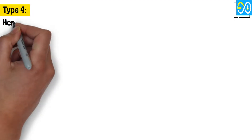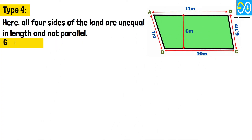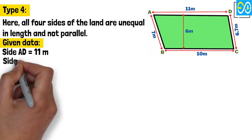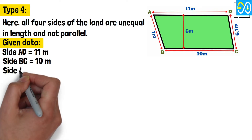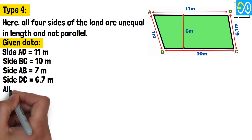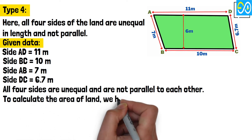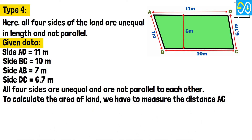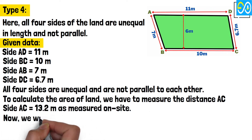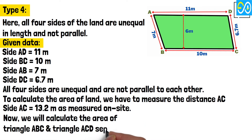Type 4. Here, all four sides of the land are unequal in length and not parallel. Given data: Side A, D equals 11 meters. Side B, C equals 10 meters. Side A, B equals 7 meters. Side D, C equals 6.7 meters. All four sides are unequal and are not parallel to each other. To calculate the area of the land, we have to measure the distance A, C. Side A, C equals 13.2 meters, as measured on site.